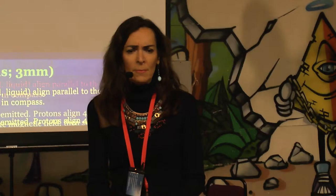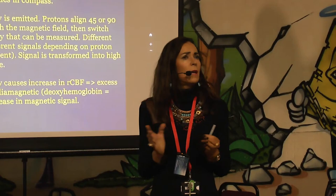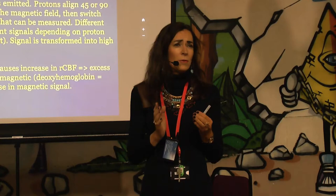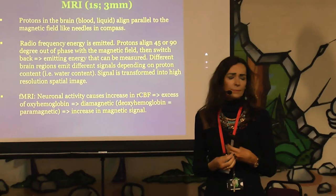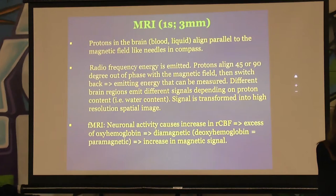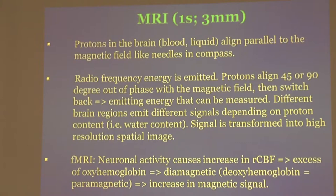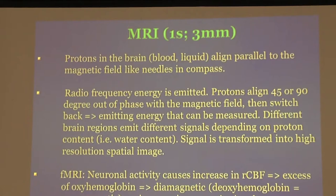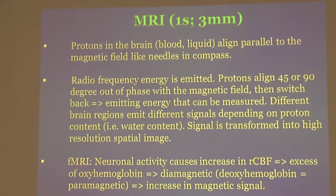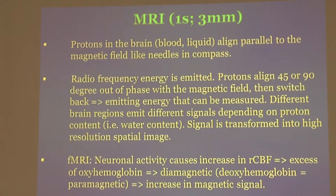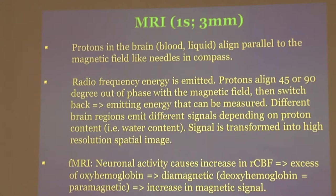MRI is totally non-invasive, it doesn't hurt, it doesn't have any side effects — it's a huge magnet. The protons in the brain which are in liquid, like blood, align parallel to the magnetic field. Then a radio frequency is emitted and they flip out of phase, then flip back. Different areas in the brain have different water contents and different numbers of protons, so they flip back in different ways, emitting different magnetic signals which can be reconstructed into a high-resolution structural image of the brain.